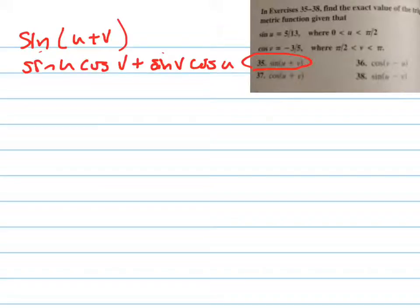Alright, so sometimes I like to just write and make sure I have all these things. So let's write the sine of u, which I already have, it's 5 thirteenths. Let's write the cosine of v, which I already have, which is negative 3 fifths.